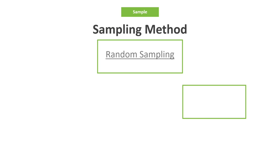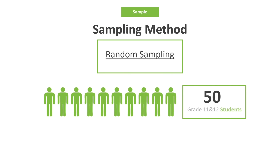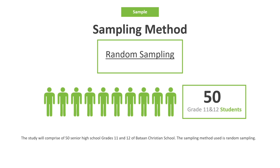Now we are going to proceed with the sample and the sampling method used. In this particular research, the researchers used random sampling where the respondents are chosen randomly without any interference from the researchers themselves. This is to ensure an unbiased study with an objective point of view. The population of the study will consist of 50 respondents, all from the senior high school department of Bataan Christian School, both grades 11 and 12.